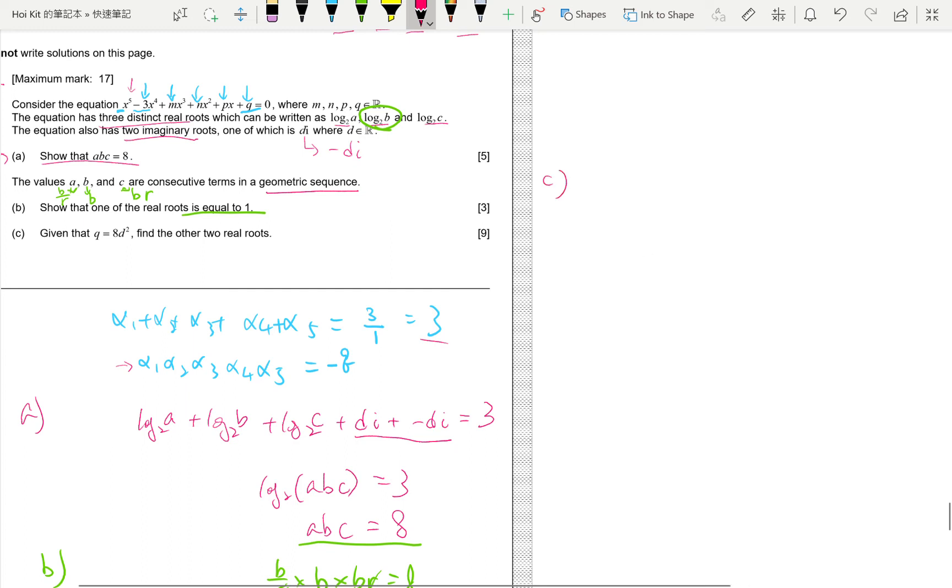Let's see. Given that q is 8d squared, I find the other roots. So, that should be straight forward. Oh, it's 9 mark. We'll see. Q is here. So, probably using product roots. So, the product log a base 2, log b base 2, log c base 2, times di, times minus di, and we know it should be minus q.